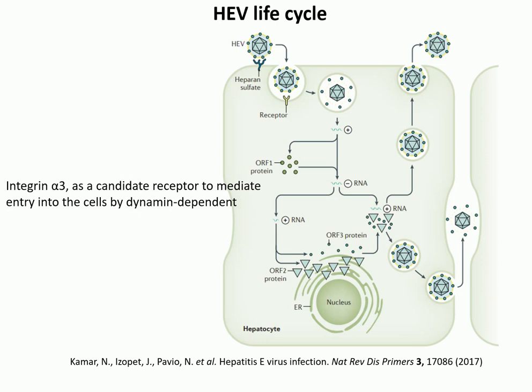The complete virus particle is then assembled where the capsid proteins pass through the endoplasmic reticulum and meet with the genomic RNA. This complete virus particle is exported out by losing its lipid outer covering via bile. It is then secreted into the biliary canaliculi, which traffics the viral particles to the gastrointestinal tract, where they are excreted. The bile removes the lipid envelope, releasing a naked virus particle that can infect new healthy cells.